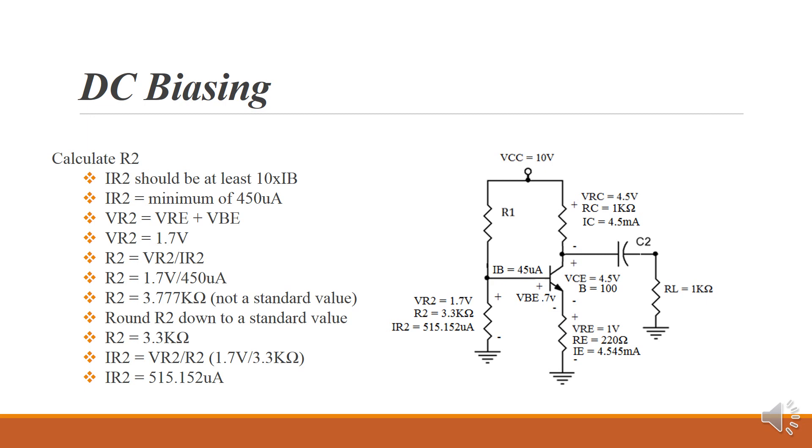Now we need to know the voltage VR2, and if we Kirchhoff, we can see that we've got VBE plus VRE. So that gives us the 1.7 volts. If we divide that by the 450 microamps, which is IB times 10, it gives us 3.777k ohms, which is not a standard value.